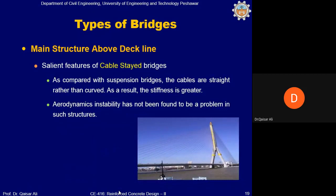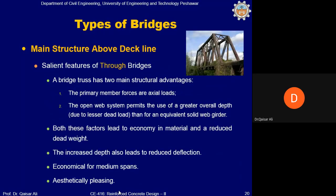In cable-stayed bridges, compared to suspension bridges, the cables are straight rather than curved, resulting in greater stiffness, and aerodynamic instability is not a problem. However, cable-stayed bridges are comparatively more costly than suspension bridges. For through-truss bridges, the primary member forces are axial loads. The open web system allows a greater overall depth with less dead load than an equivalent solid web girder, leading to economy in material, reduced dead weight, and reduced deflection.